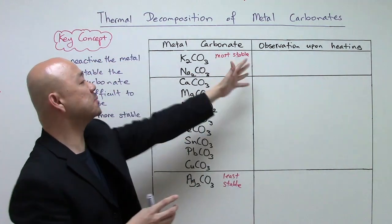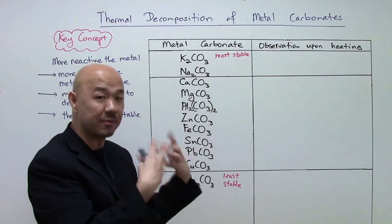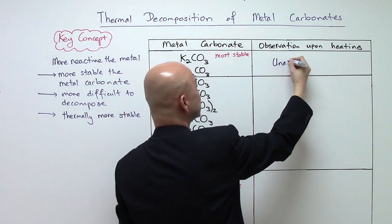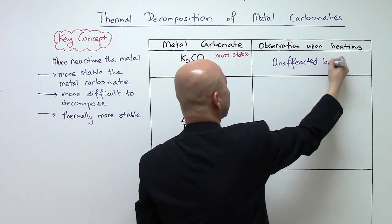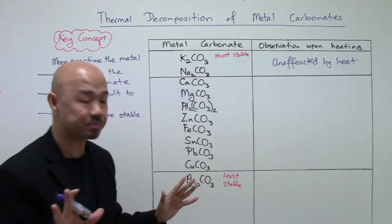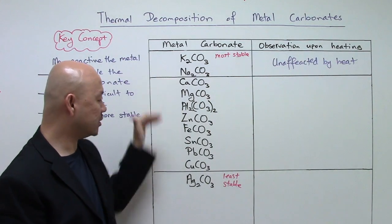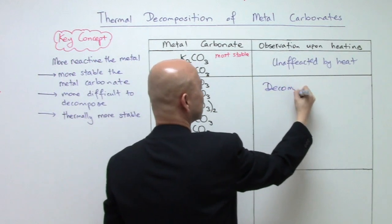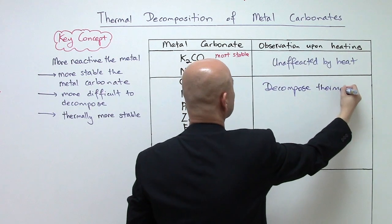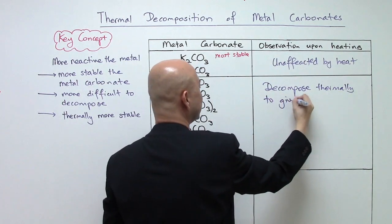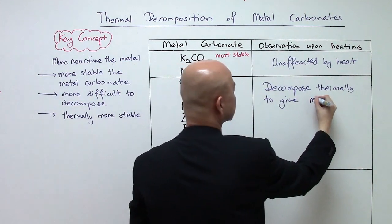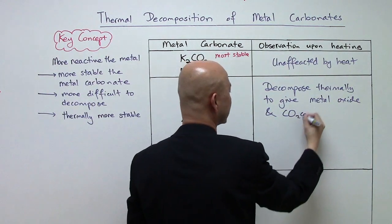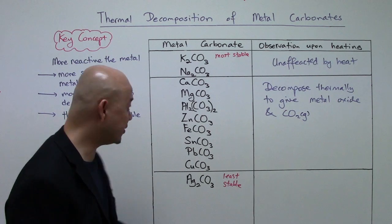What is the observation upon heating these carbonates in a test tube or boiling tube? The two Group 1 metal carbonates — potassium carbonate and sodium carbonate — are unaffected by heat; there is no reaction. However, from calcium carbonate all the way down to copper carbonate, they will thermally decompose to produce a metal oxide and carbon dioxide gas.